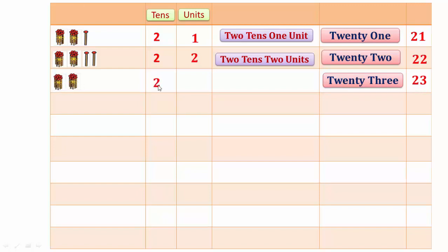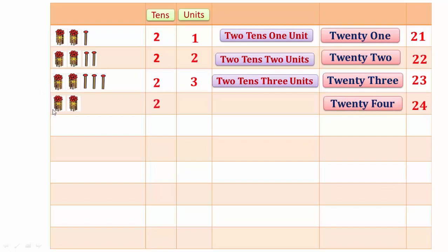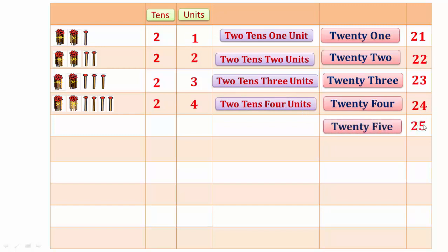In 23, two tens and three units make 23. In 24, two tens and four units make 24. In 25, two tens and five units make 25.